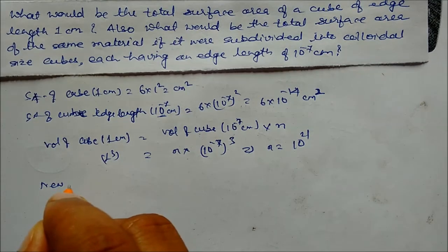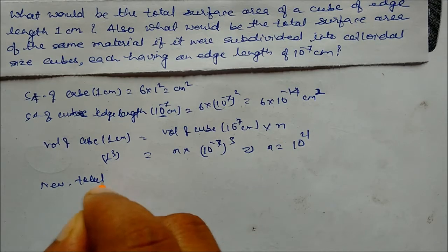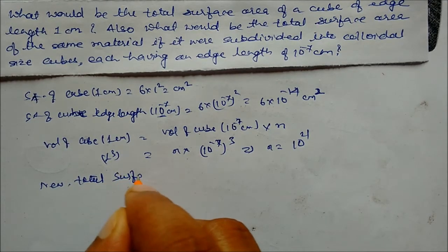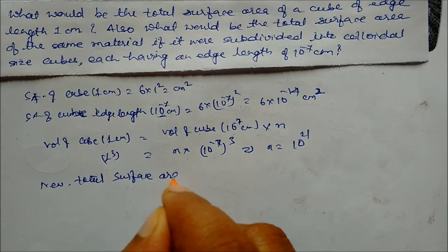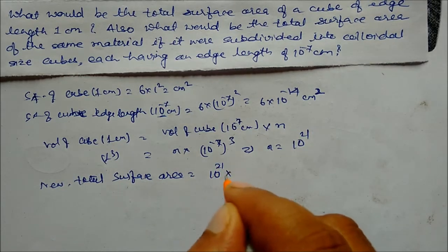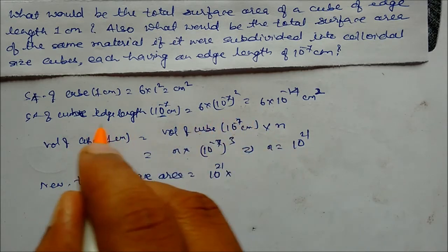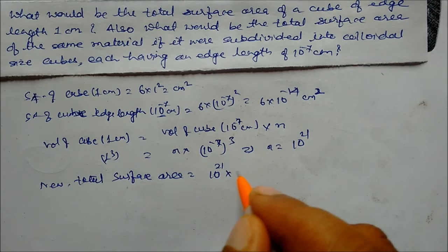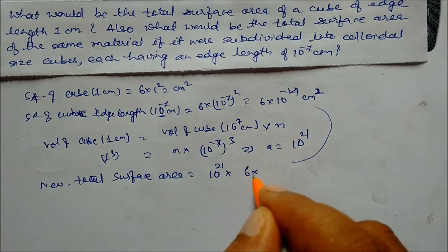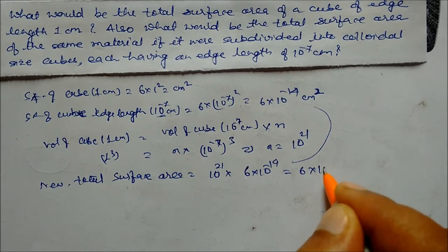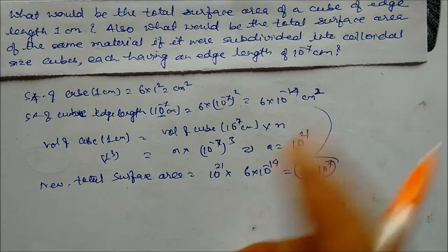Now new total surface area will be n multiplied by surface area of each small cube, so 10²¹ multiplied by 6 into 10⁻¹⁴. The answer will be 6 into 10 to the power 7 cm squared. So this is our total answer.